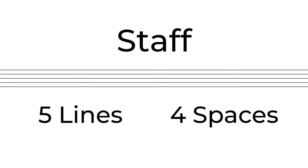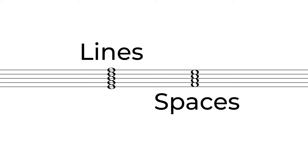Just like in part one, let's start off with the staff, which contains five lines and the four spaces in between those lines. Our music notes live either on a line or in a space.